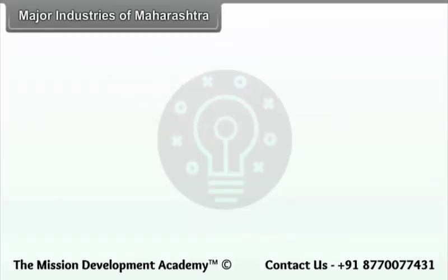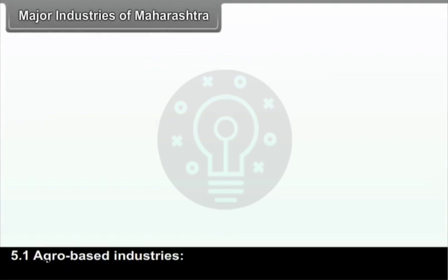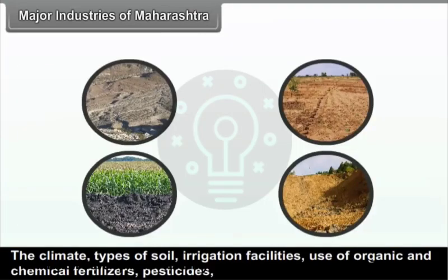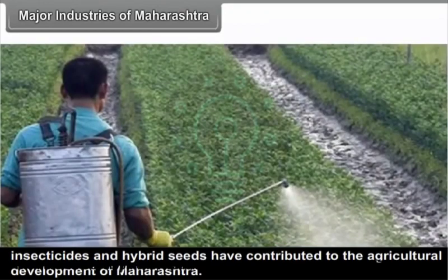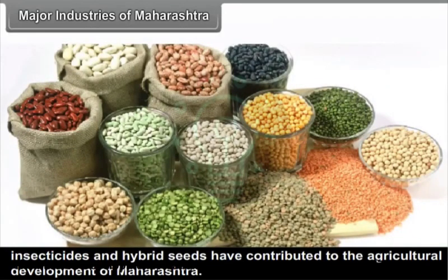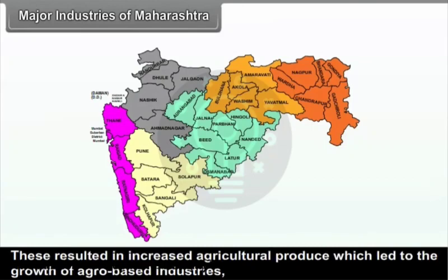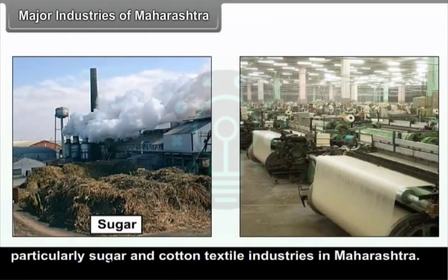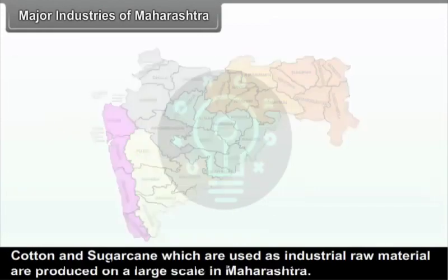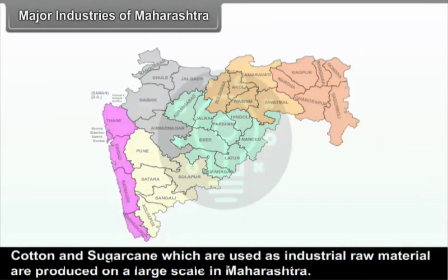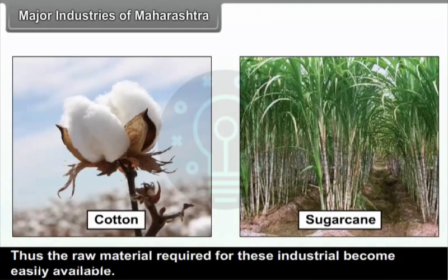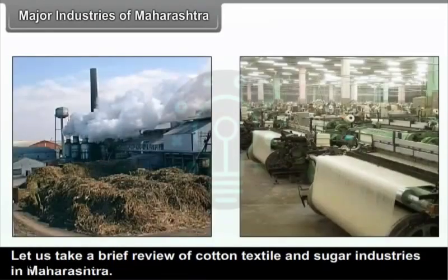The climate, types of soil, irrigation facilities, use of organic and chemical fertilizers, pesticides, insecticides and hybrid seeds have contributed to the agricultural development of Maharashtra. These resulted in increased agricultural produce, which led to the growth of agro-based industries, particularly sugar and cotton textile industries in Maharashtra. Cotton and sugarcane, which are used as industrial raw materials, are produced on a large scale in Maharashtra, making raw material easily available.